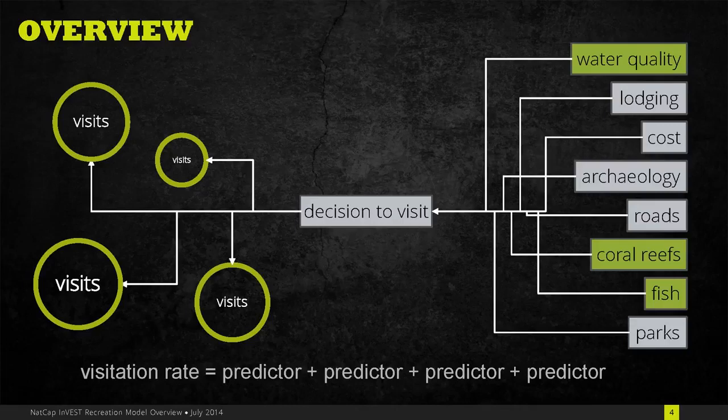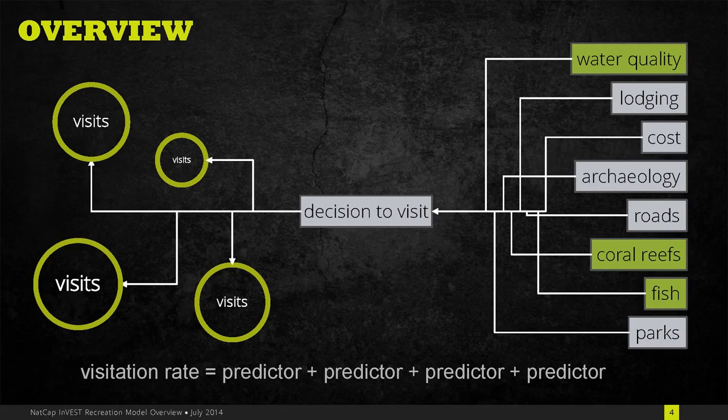Typically the way people model these decisions is with a linear regression where these predictors, things like water quality or access or the safety of a place, are used as predictors of the number of visits to each place.